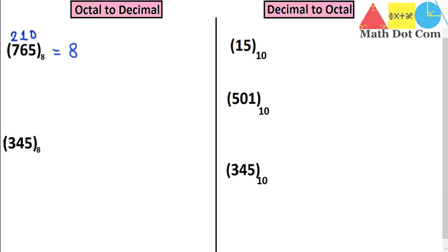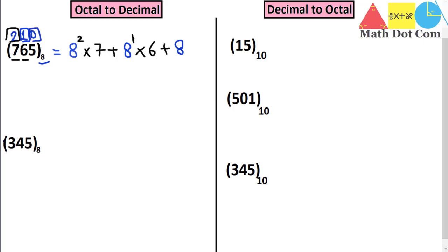So first we take location 2: 8 squared multiplied by 7, plus 8 to the power 1 multiplied by 6, plus 8 to the power 0 multiplied by 5. What we get is 448 plus 48 plus 5.